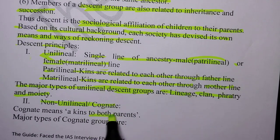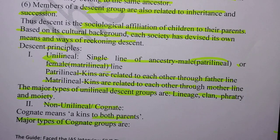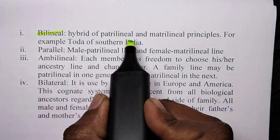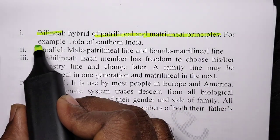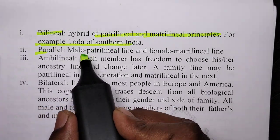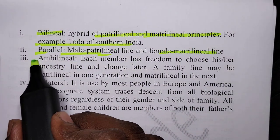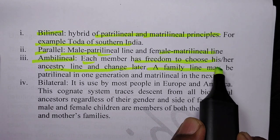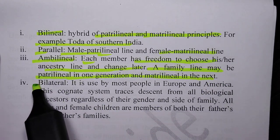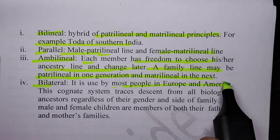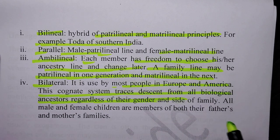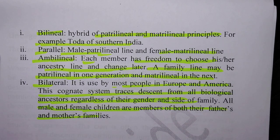Major types of cognate groups include bilineal descent, which is a hybrid of patrilineal and matrilineal principles — for example, the Toda of Southern India have parallel male patrilineal and female matrilineal lines. Ambilineal descent gives each member freedom to choose their ancestry line and change it later; the family line may be patrilineal in one generation and matrilineal in the next. Bilateral descent, used by most people in Europe and America, traces descent from all biological ancestors regardless of gender or side of family, so all male and female children are members of both their father's and mother's family.